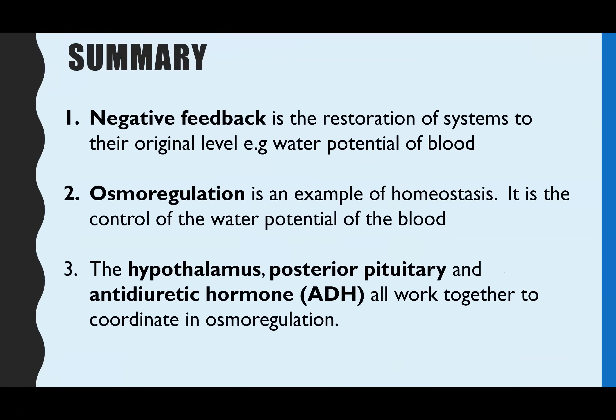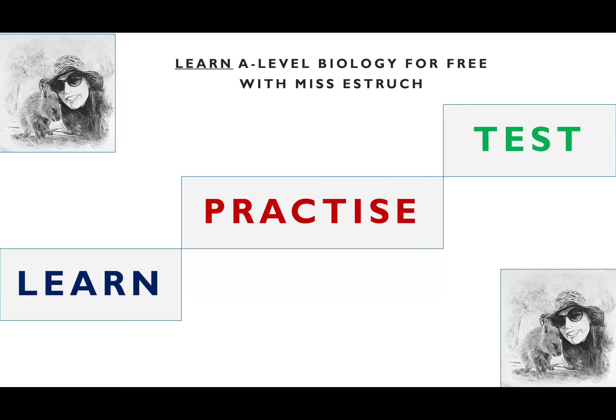In summary, negative feedback is the restoration of systems to their original level — in this example, the water potential of the blood. Osmoregulation is an example of homeostasis and is the control of water potential of the blood. The hypothalamus, posterior pituitary gland, and anti-diuretic hormone all work together to coordinate osmoregulation. For practice questions, head over to missestrick.com. If you found today's video helpful, please give it a thumbs up.